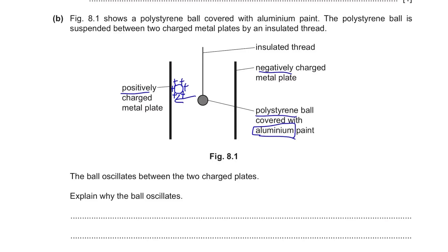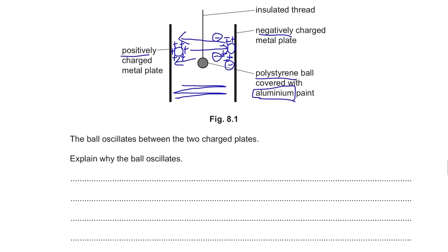Once it gets positively charged, it's going to be repelled by the positively charged metal plate because they are the same charge and like charges repel. Once repelled, it will move to the negatively charged metal plate carrying positive charges. When it touches the negatively charged plate, it loses its charge as the plate gives negative charges to the ball and everything neutralizes. Then it becomes negatively charged overall and starts moving back towards the positive plate — so it keeps oscillating.